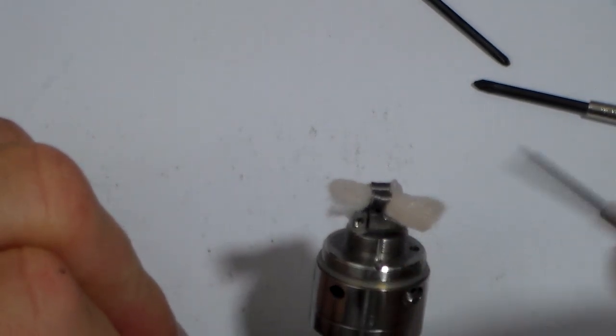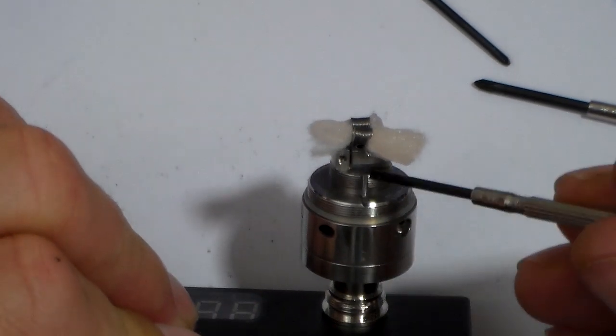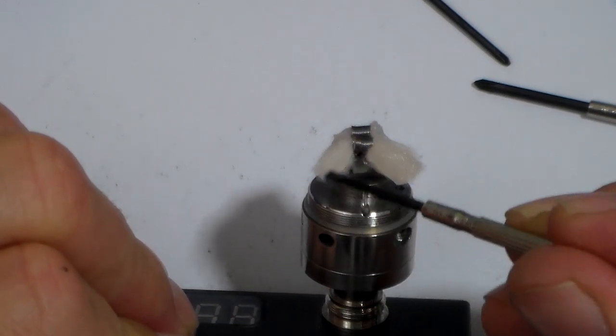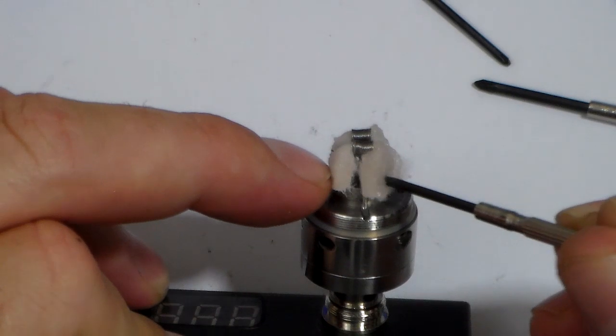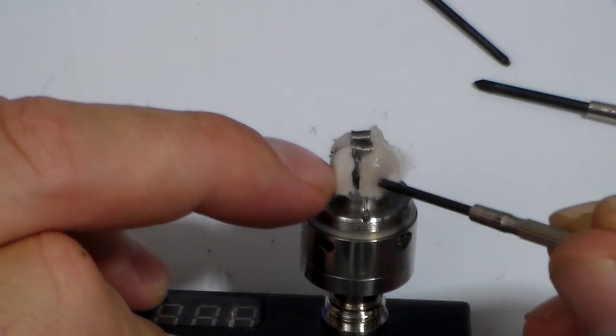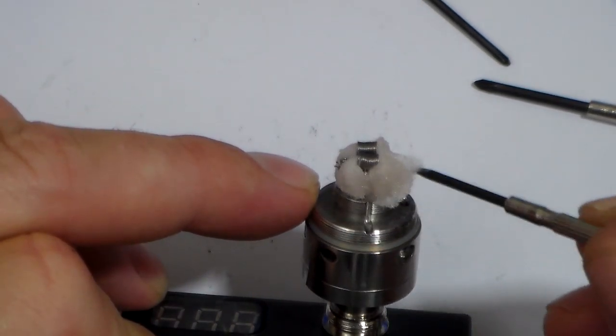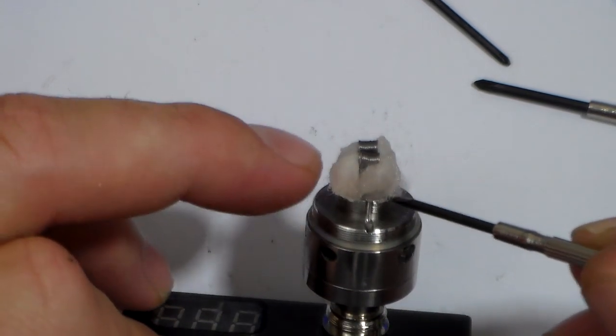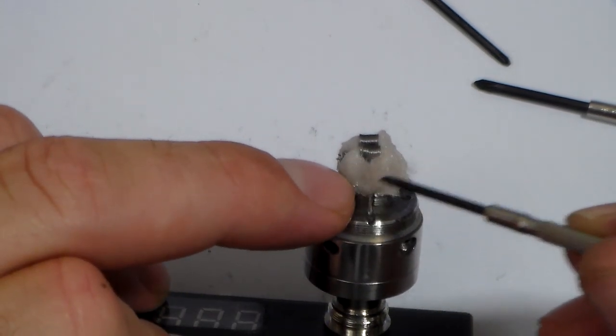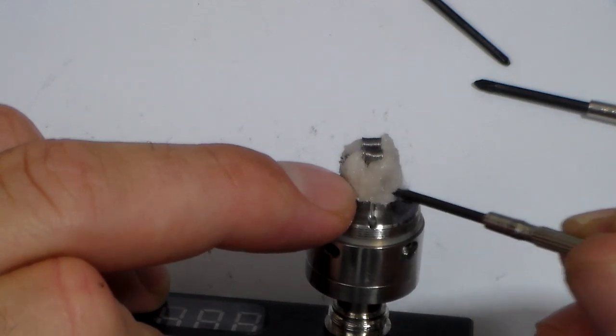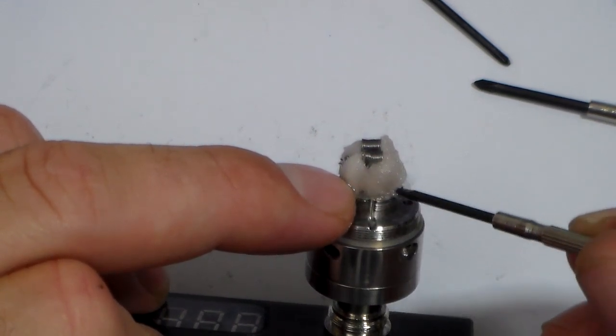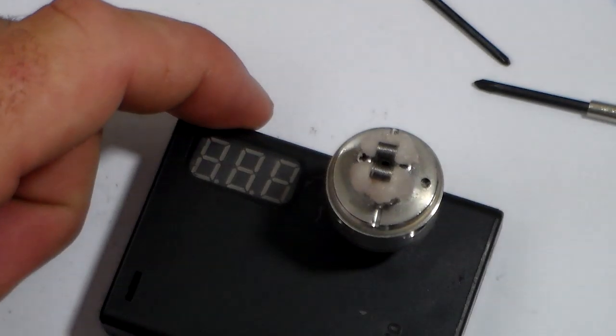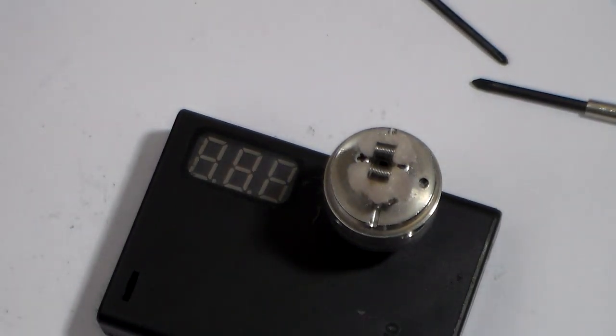I'll show you on the other side here. Let's go ahead and pull this one up. That ledge right there. So just take your cotton, pull this side a little, take your cotton and drape it down, tuck it down in there. Just like that.